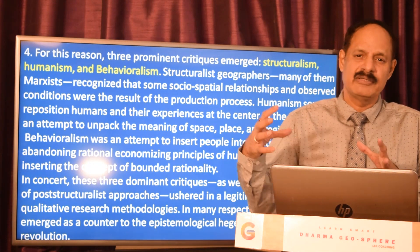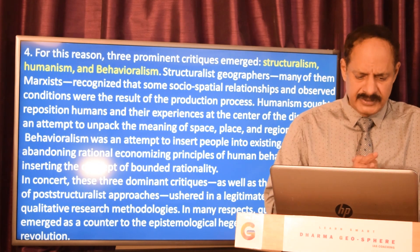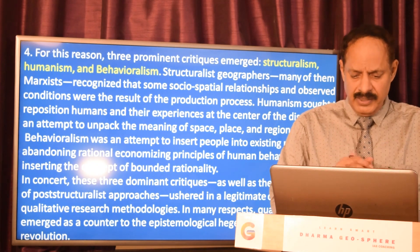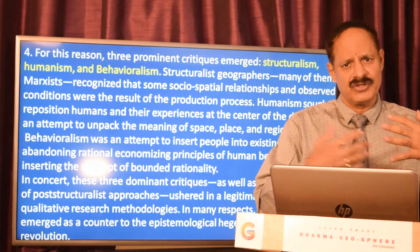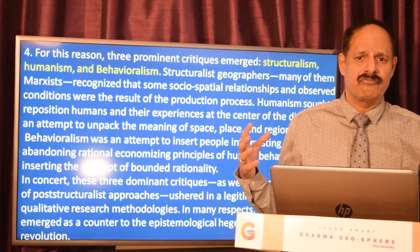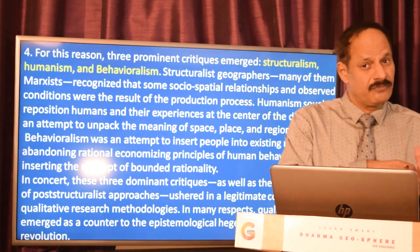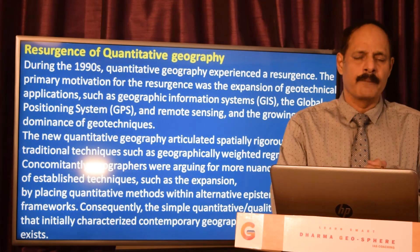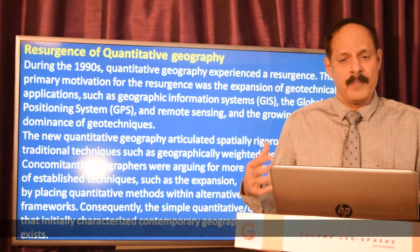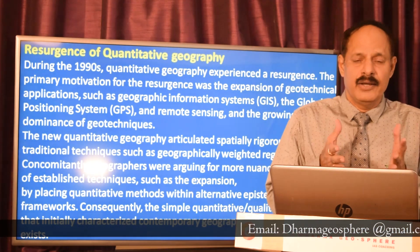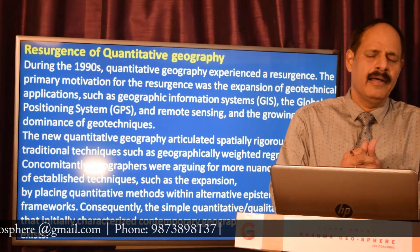Based on structuralism, humanism, and behaviorism, geography moved toward qualitative approaches. In many aspects, qualitative methods emerged as a counter to the epistemological hegemony of the quantitative revolution, which was trying to sweep away many earlier and important concepts of the human interface with the environment. That is how quantitative revolution lost its ground — because it was not able to internalize the human aspects and left the human interface unattended.